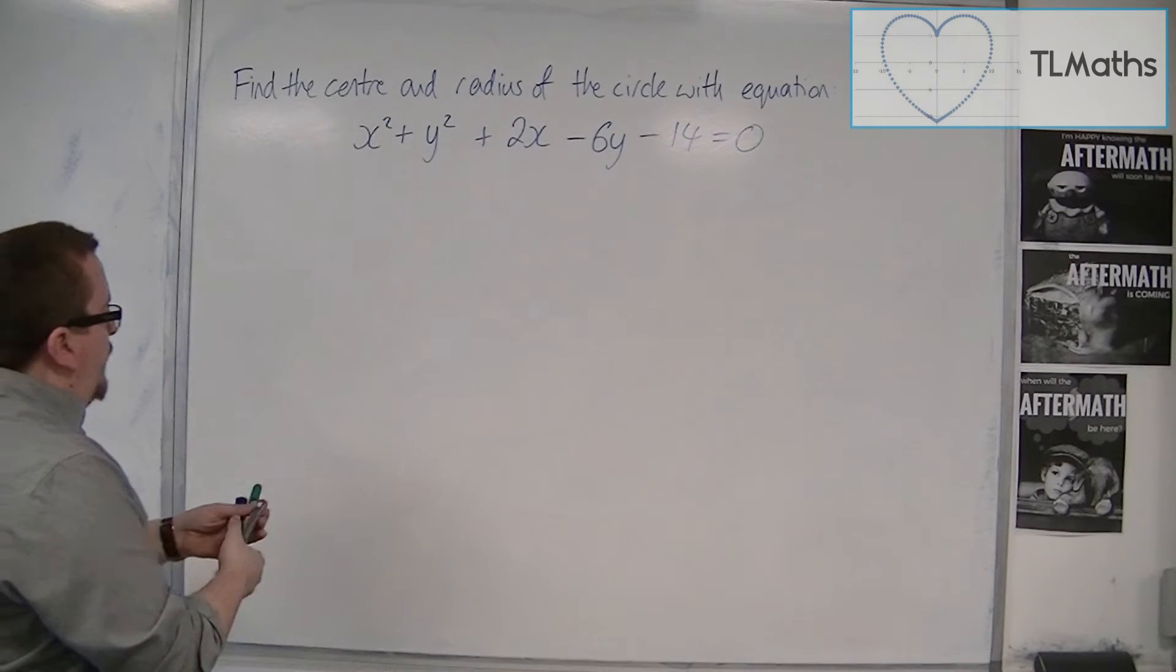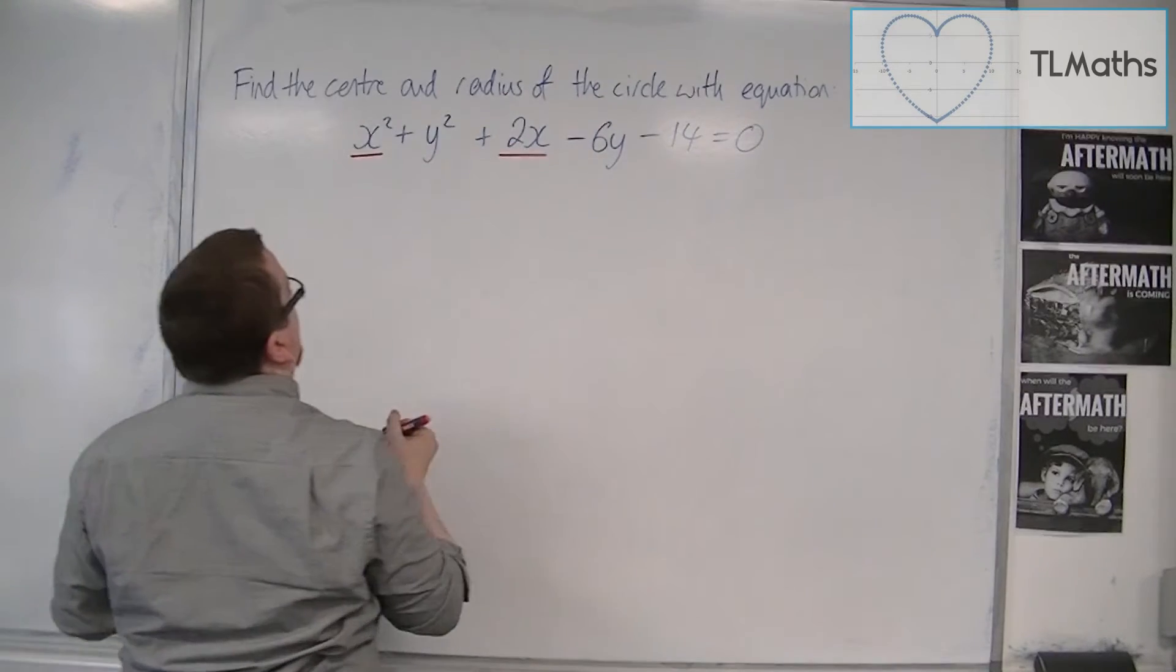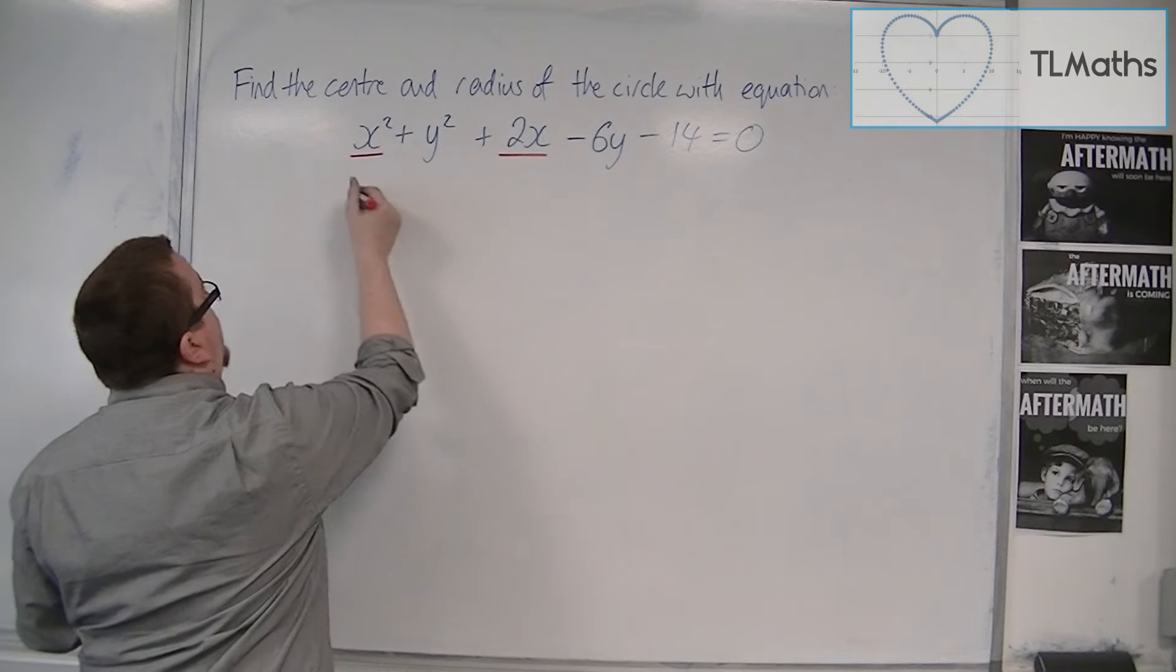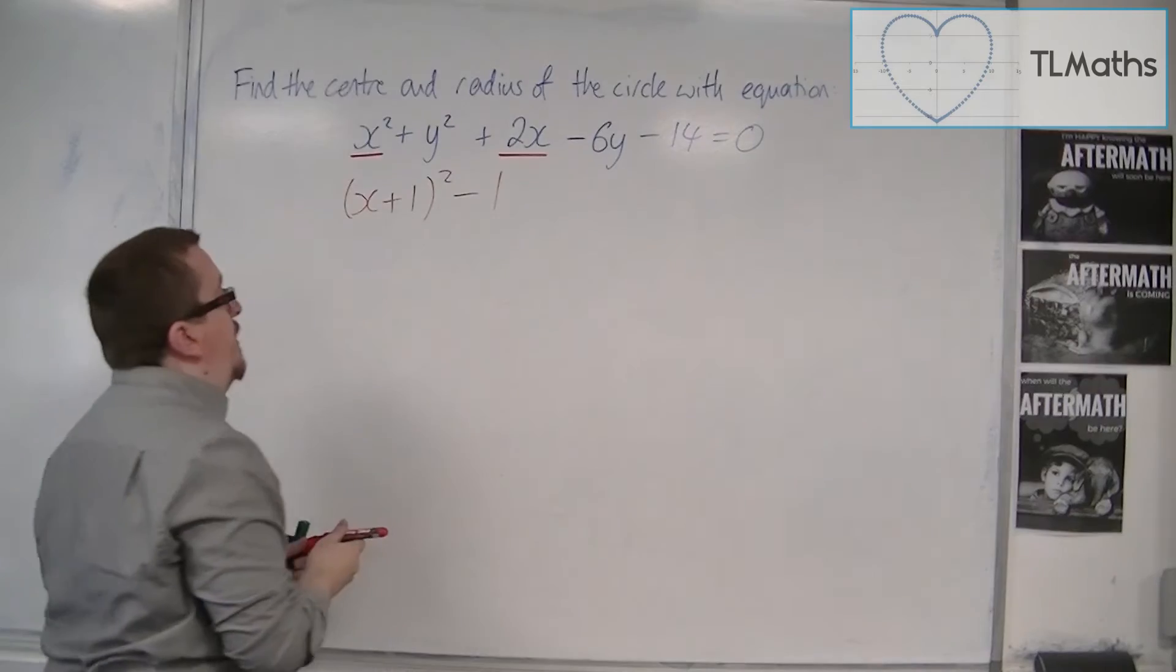So I want to complete the square on the x's. So I've got x squared plus 2x, so that'd be x plus 1 squared. Take away the square of the 1, so minus 1.